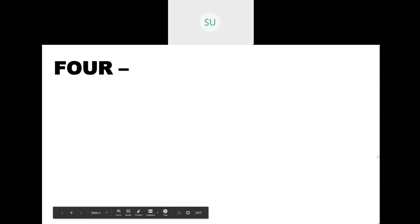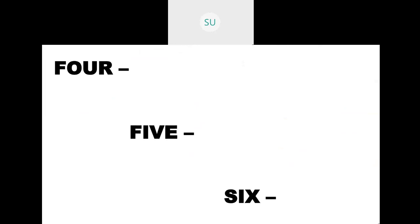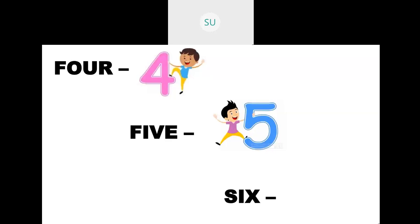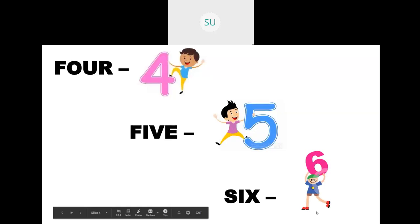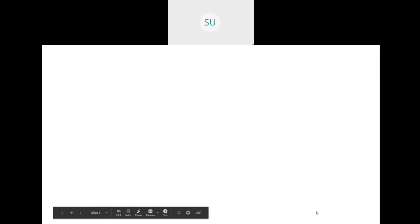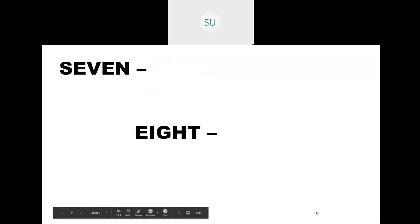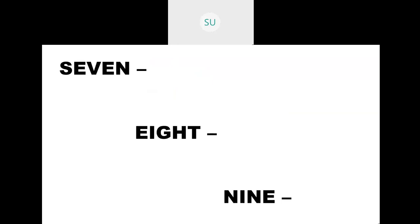After 3 we have 4, so F-O-U-R is 4. Then F-I-V-E is 5. Then S-I-X is 6. So 4 is FOUR, 5 is FIVE, and 6 is SIX.